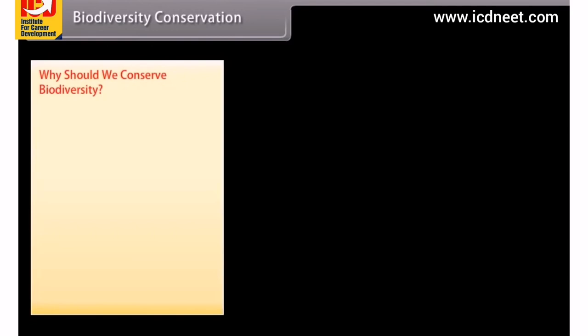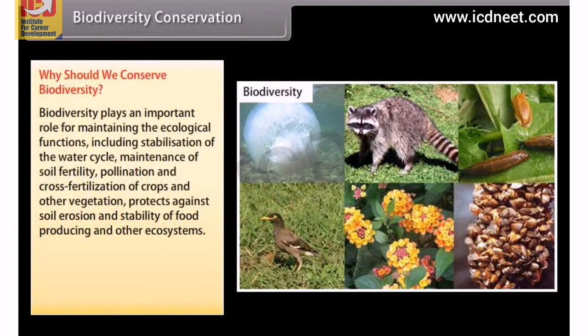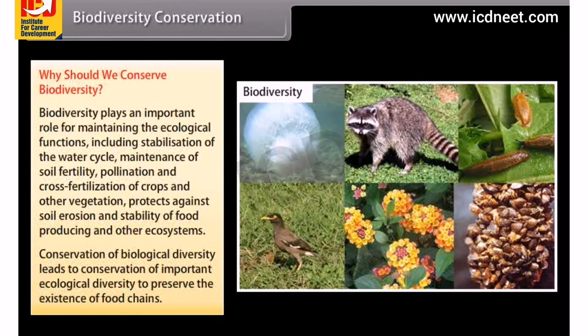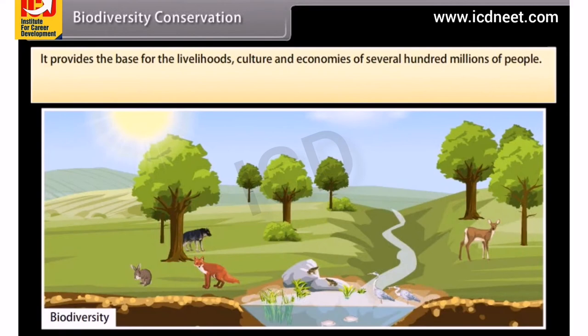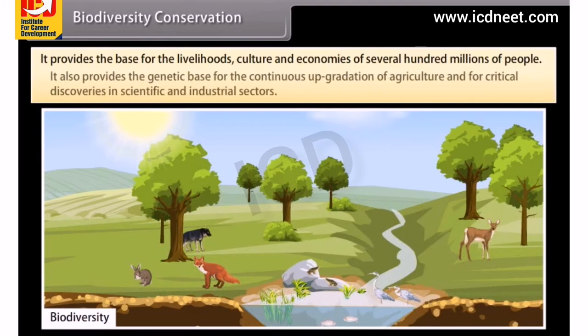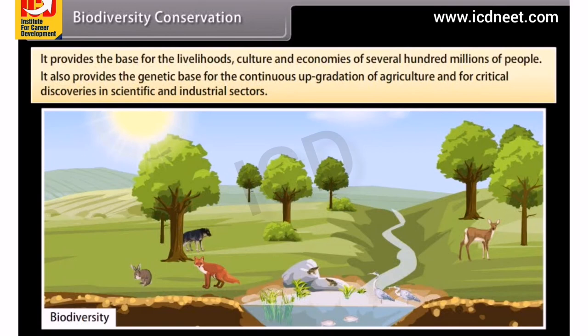Biodiversity Conservation. Why should we conserve biodiversity? Biodiversity plays an important role in maintaining ecological functions, including stabilization of the water cycle, maintenance of soil fertility, pollination and cross-fertilization of crops and other vegetation, protection against soil erosion, and stability of food-producing ecosystems. Conservation of biological diversity leads to preservation of food chains, provides the base for livelihoods, culture and economies of millions of people, and provides the genetic base for continuous upgradation of agriculture and for critical discoveries in scientific and industrial sectors.